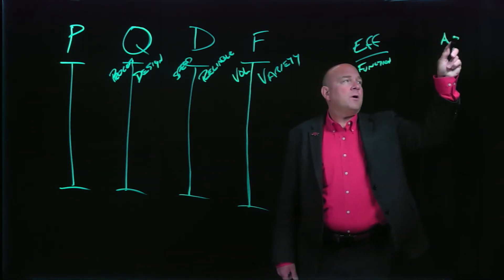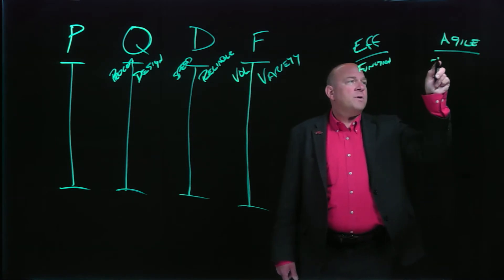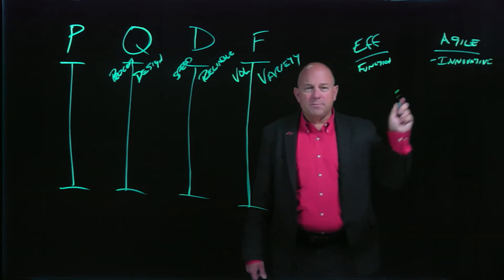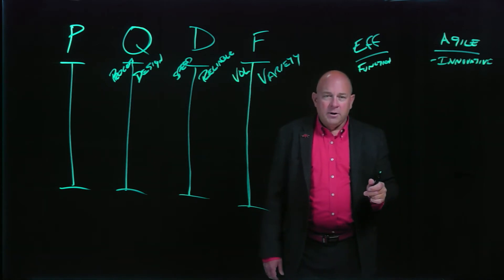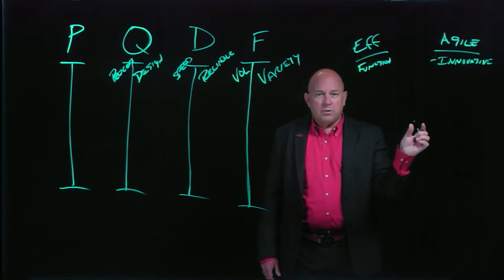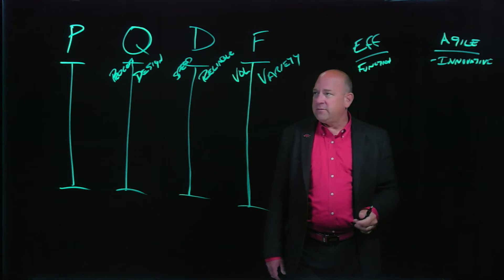And then we have what we call agile supply chain strategies, which tend to deliver on more innovative products. This is a much less predictable type of environment with higher forecasting error, higher contribution margins per unit, which can be good, shorter product life cycles, and much faster paced environment.